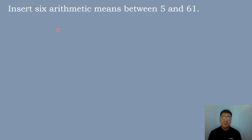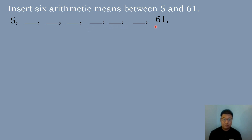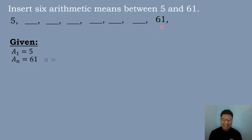Let's have our first example: insert 6 arithmetic means between 5 and 61. We will insert 6 blanks between the numbers 5 and 61. Then we will identify the given: a sub 1 is equal to 5, the value of our first term, and a sub n is equal to 61, the value of our last term. To get the value of n, we will count the number of terms.